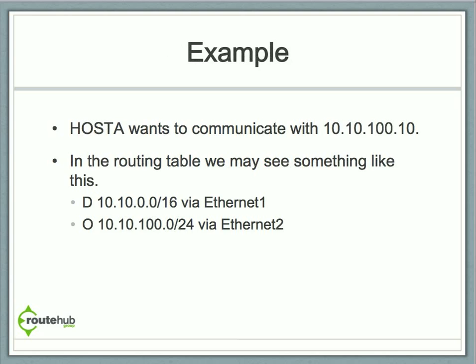Let's use an example to understand this fully. Let's say host8 wants to communicate with 10.10.100.10. In that host's default gateway router, the routing table may look something like this: it's learning via EIGRP — indicated with a D — a route for 10.10.0.0/16, routing that out of Ethernet 1.